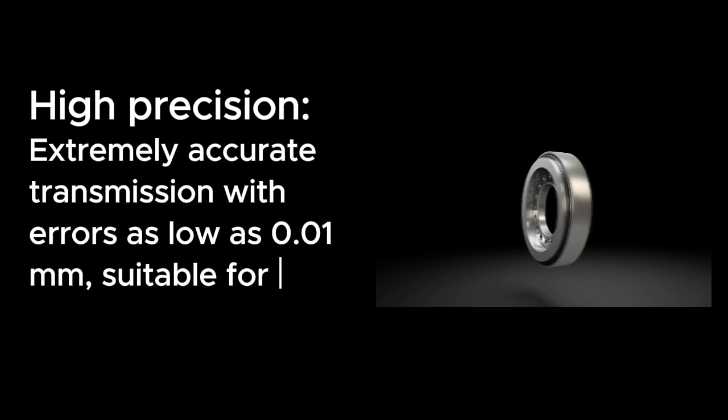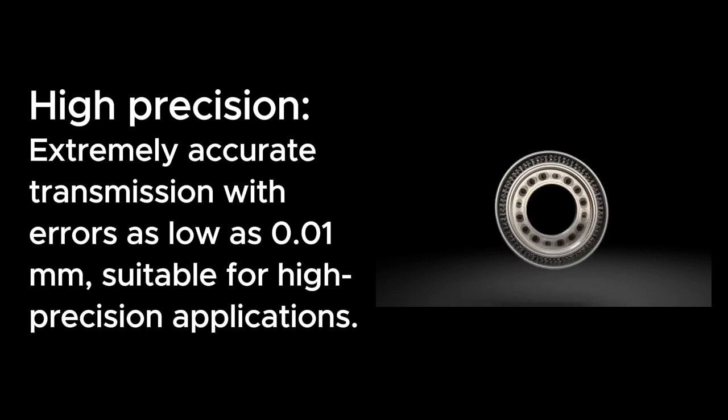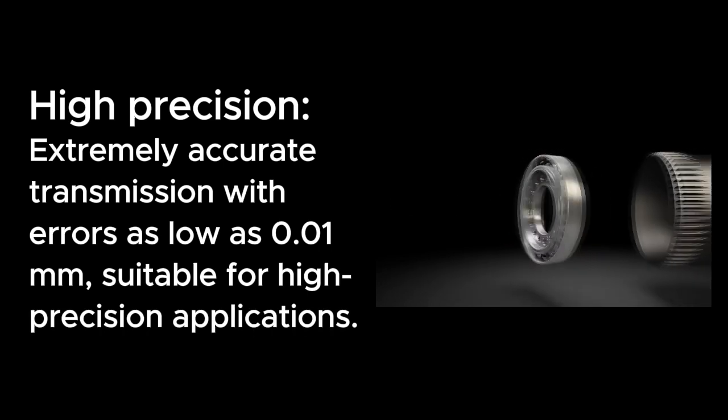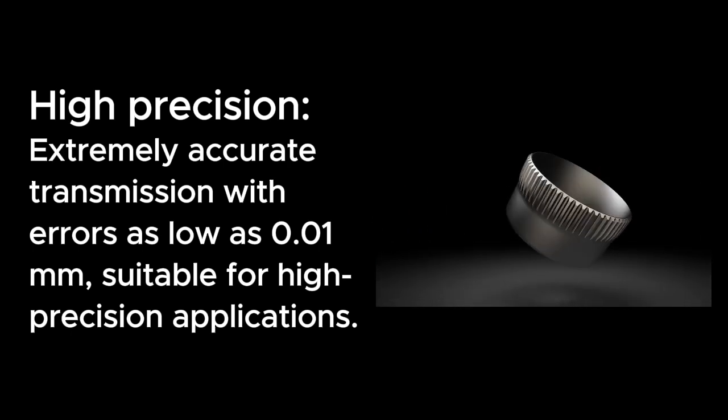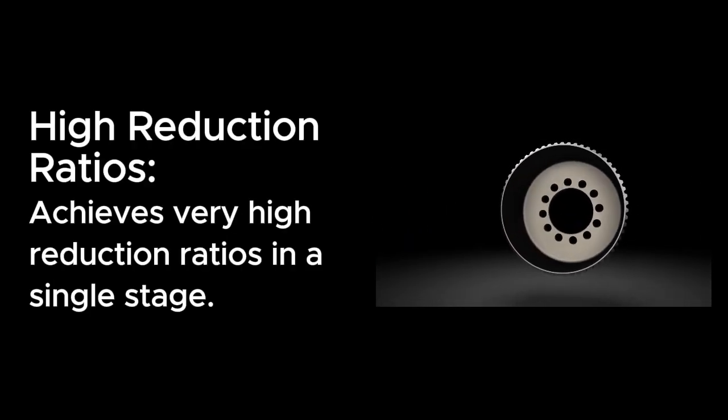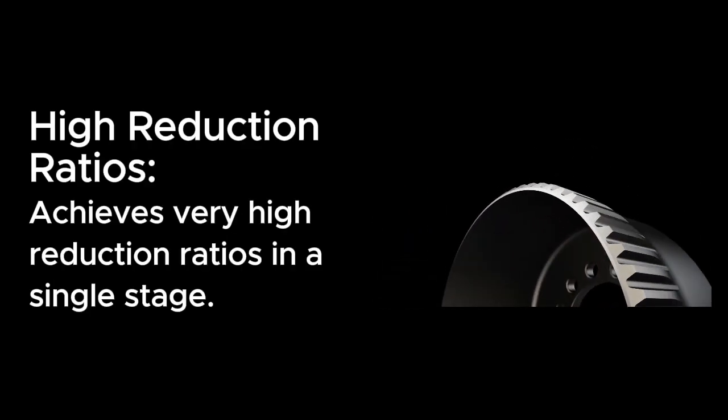The advantages of Harmonic Gear Reducer: Extremely accurate transmission with errors as low as 0.01 mm, suitable for high-precision applications. Achieves very high reduction ratios in a single stage.